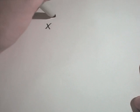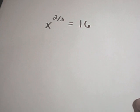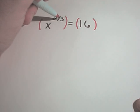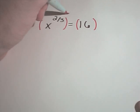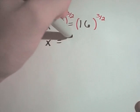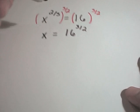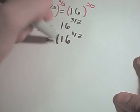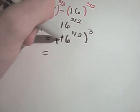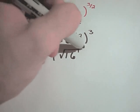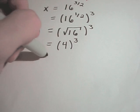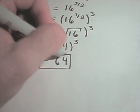Suppose instead we have x to the 2/3rd equals 16. I want to get x to the 1st power, so I'll raise both sides to the 3/2 power, since 2/3 times 3/2 equals 1. On the left I get x to the 1st. Now I have to evaluate 16 to the 3/2 power. I can write that as 16 to the 1/2, raised to the 3rd power, since 1/2 times 3 gives 3/2. 16 to the 1/2 is the square root of 16, which is 4. And 4 cubed — 4 times 4 is 16, times another 4 is 64 — that's our solution.